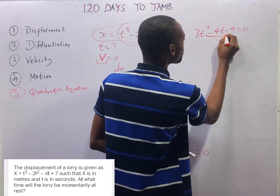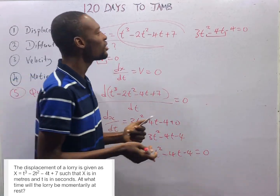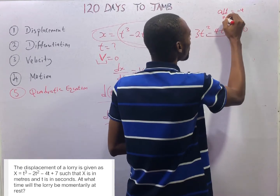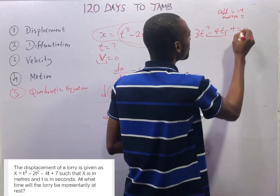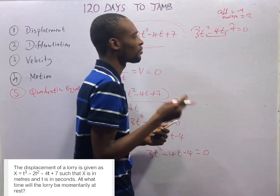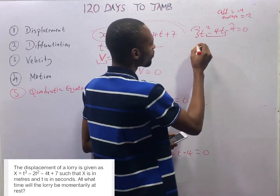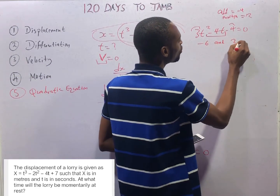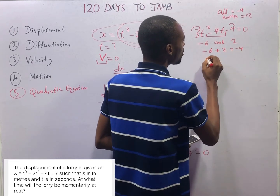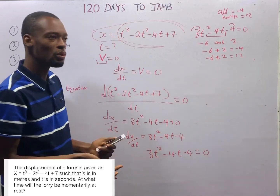For factorization, the middle term is −4t. You look for two numbers that, when you add them, give −4, and when you multiply them, give −12 (that is 3 × −4). Looking at −6 and 2: −6 + 2 = −4, and −6 × 2 = −12. So −6 and 2 will work.